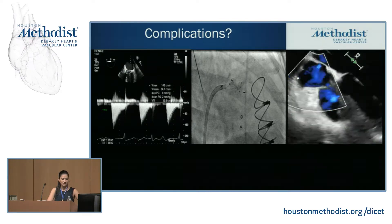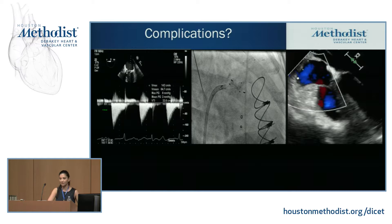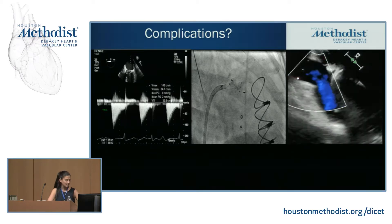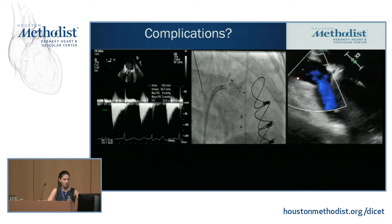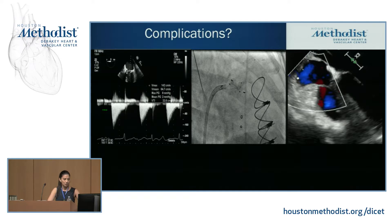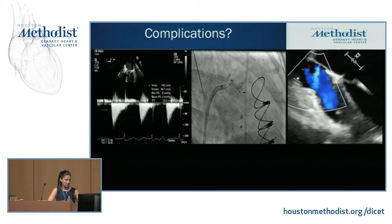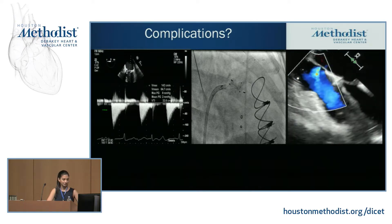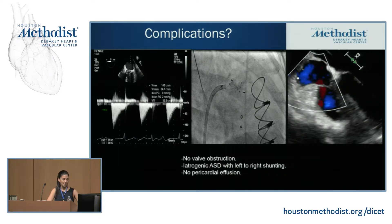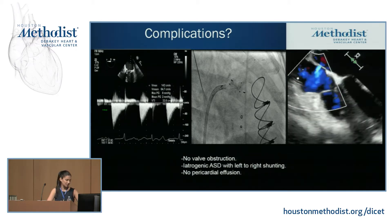At the end of the procedure, it's very important to check for complications — making sure the devices did not cause any prosthetic valve obstruction. We checked the gradients across the valve, and the mean gradient across the mitral valve was 2. We checked the fluoroscopy screen to ensure the device is well positioned in relationship to the prosthetic valve. We also noted an iatrogenic ASD, but the shunting is predominantly left to right.